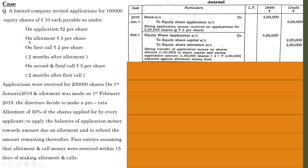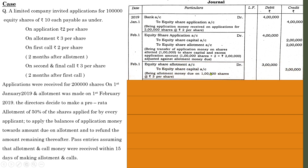Next, pass entries with regard to the second installment, allotment. The date is 1st February 2019. Entry: equity share allotment account debit to equity share capital. Allotment value is rupees 3 per share. From here onwards deal with 1 lakh shares only. So 1 lakh into 3 equals 3 lakhs. Being allotment money due on 1 lakh shares at rupees 3 per share.